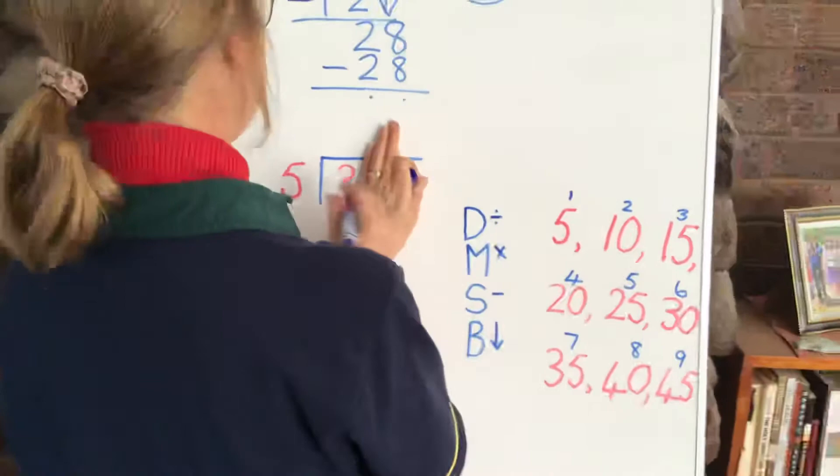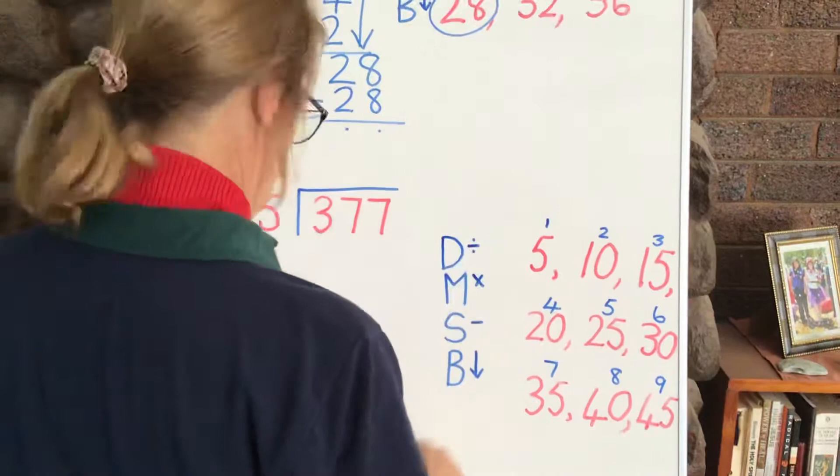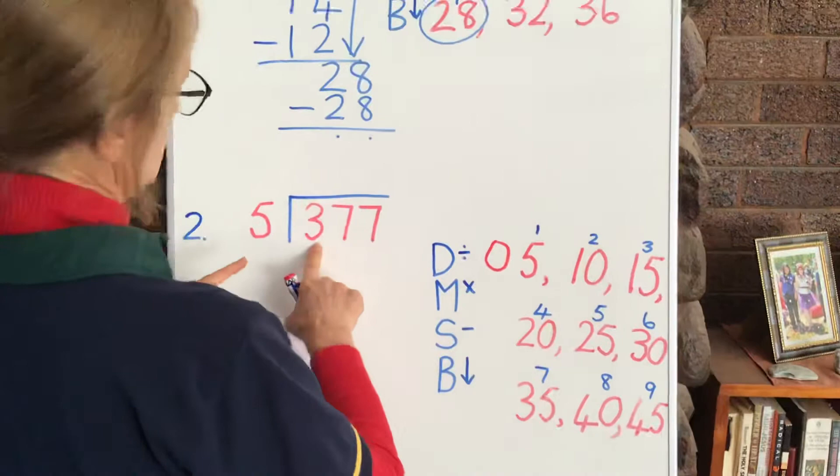Now, let's look at our second sum here, 377. Remembering to look at our first number. We're looking for a 3. Oh dear, we cannot find a 3. We cannot find anything less than 5. But remember that we can always put a 0.